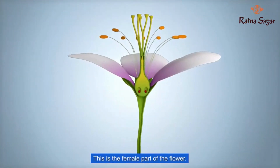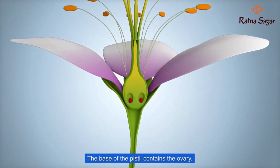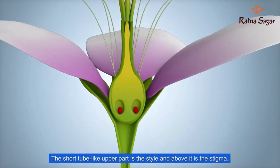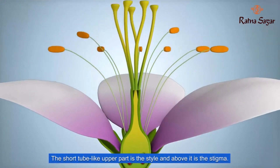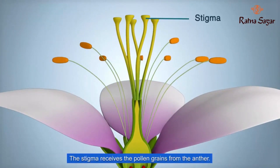The base of the pistil contains the ovary. The short tube-like upper part is the style, and above it is the stigma. The stigma receives the pollen grains from the anther.